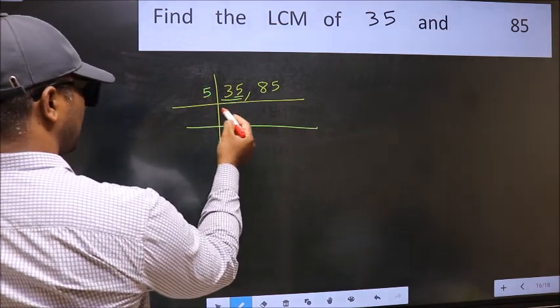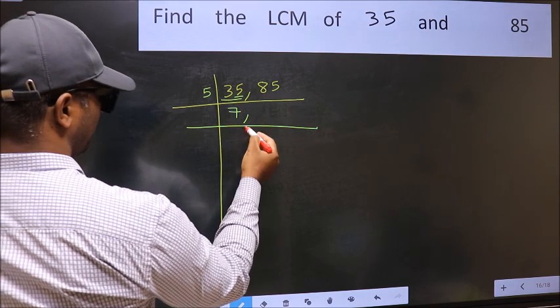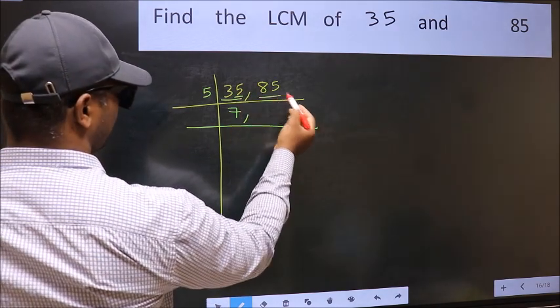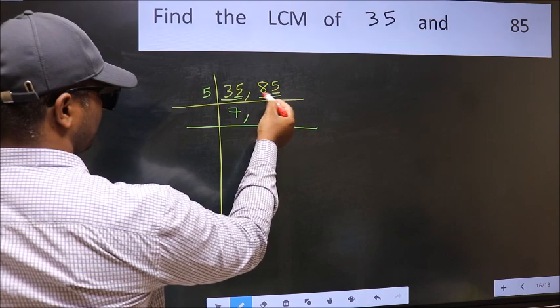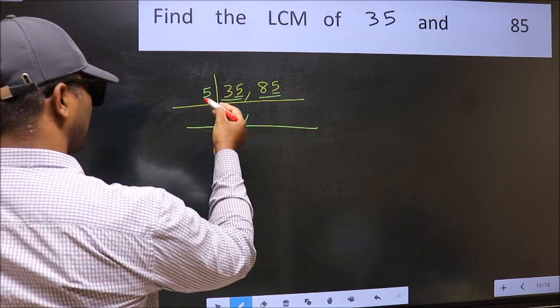When do we get 35 in 5 table? 5, 7 is 35. The other number, 85. Last digit 5, so this is divisible by 5.